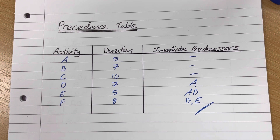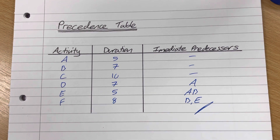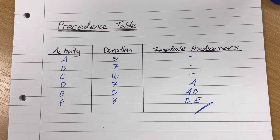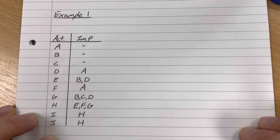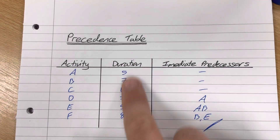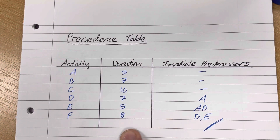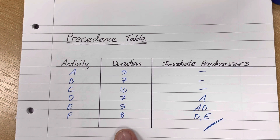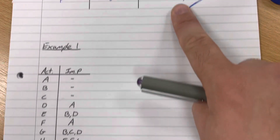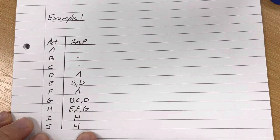I've got three examples that we're going to look at in today's video. There is a knack to this - it's quite hard to grasp initially, but once you've tried a few, you'll soon get into a routine. Be prepared for lots of corrections and scribblings out when you first try these. I've shortened the table - I don't care about the durations for this video because I'm just drawing the networks. So, I've got an activity column and an immediate predecessor column.